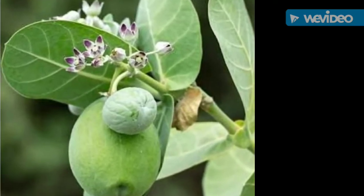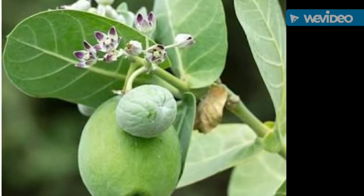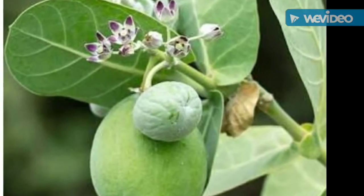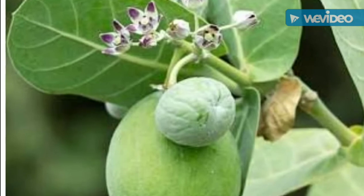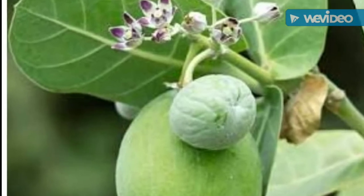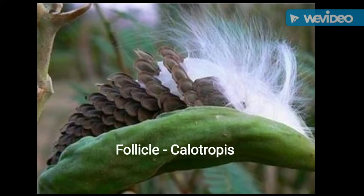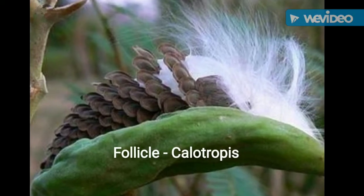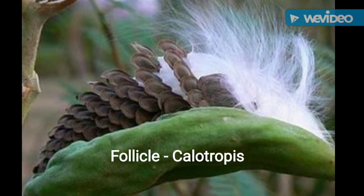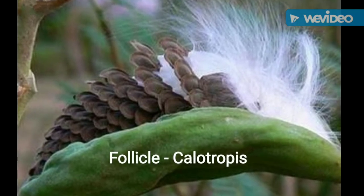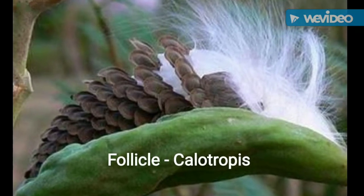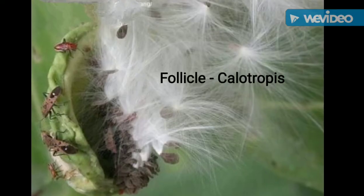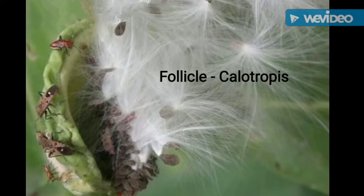The superior ovary is developed into a follicle fruit. It dehisces along one suture only — remember this — along one suture only. Example: Calotropis gigantea. The fruit breaks down along one suture only. At the time of maturity, it consists of a number of seeds.